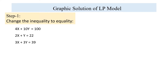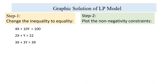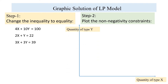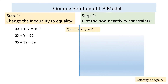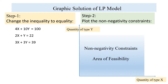The second step is to plot the non-negativity constraints on the XY plane. As you know, there are four quadrants. The first quadrant makes both x and y positive — this is the area of feasibility, also called the area of visibility, for the non-negativity constraints.